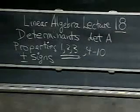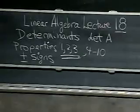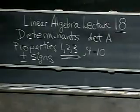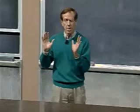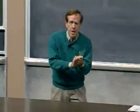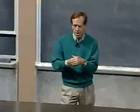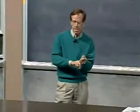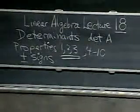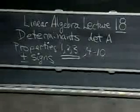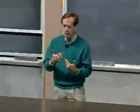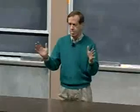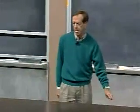This lecture is like the beginning of the second half of this course, because up to now we paid a lot of attention to rectangular matrices. Now we're concentrating on square matrices. We've got two big topics: the determinant of a square matrix — this is the first lecture in that new chapter on determinants — and the big reason we need determinants is for the eigenvalues. So this is really determinants and eigenvalues, the next big chunk of 18.06.